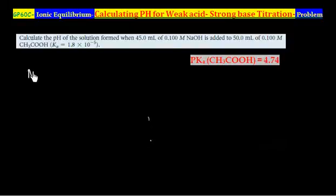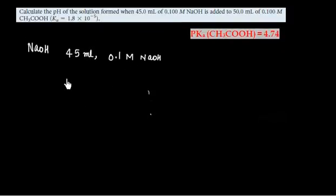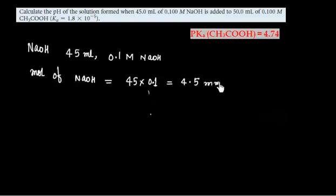So we have been given NaOH, this is 45 mL, this is 0.1 M NaOH, so we can calculate mole of NaOH. That is 45 into 0.1, so we will have 4.5 mmol.